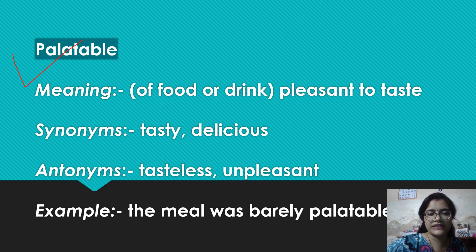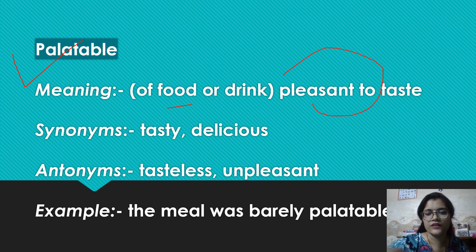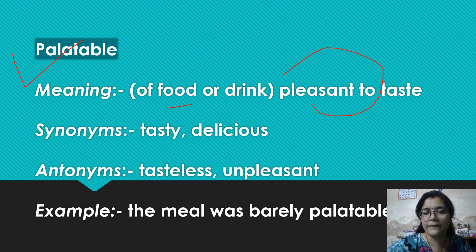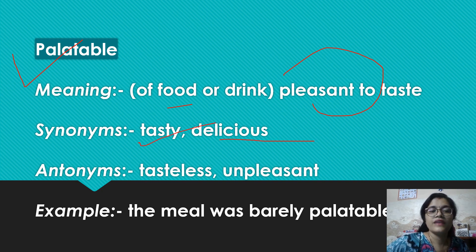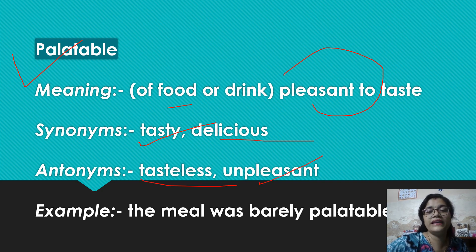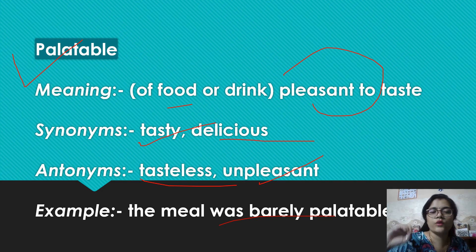Palatable ka matlab hota hai — matlab kisi food ke baare mein ya kisi drink ke baare mein batana chahaa rahe hain, whether or not that is pleasant to taste. Agar uska taste achha hai, then you are going to say that it's palatable. Synonyms: tasty, delicious. Antonyms: tasteless ya phir unpleasant. Example: The meal was barely palatable — so if you are saying ki jo meal thi jo aapne li, it wasn't good, so you are saying the meal was barely palatable.